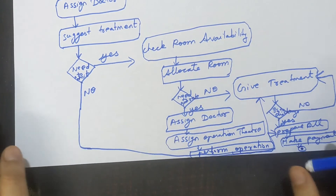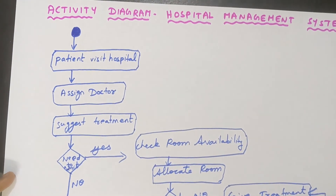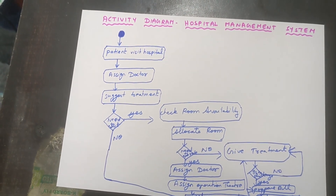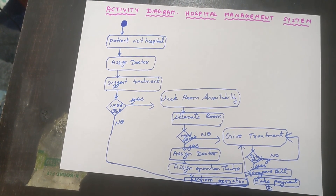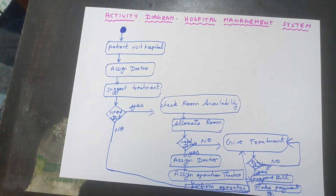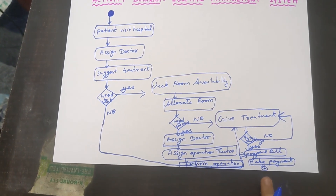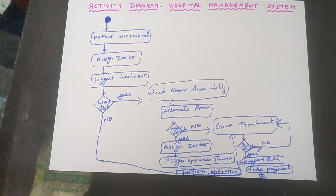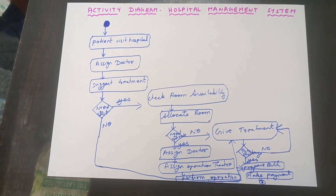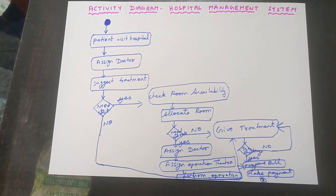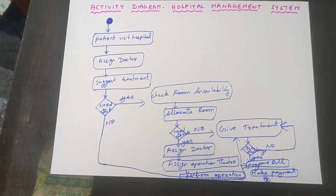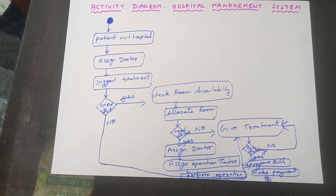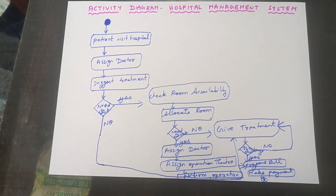So this is the entire flow of the activity diagram for the hospital management system. Don't forget to include the start symbol and the stop symbol — they are very important. If you like this video, please like, subscribe, and share it with your friends. If you have any doubts, ask in the comment section. I have also uploaded videos for use case diagram, class diagram, and sequence diagram — you can watch those too. Thank you so much.